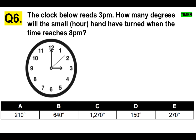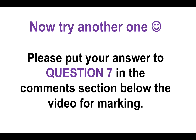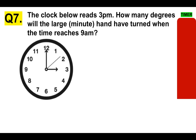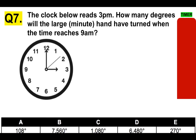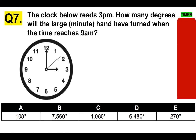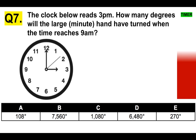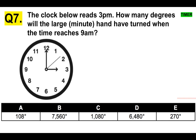Hope you're still with us and enjoying these. Please put your answer to question 7 in the comments section below the video for marking. The clock below reads 3 PM. How many degrees will the large minute hand have turned when the time reaches 9 AM? Tricky one. Is it A) 108 degrees, B) 7,560 degrees, C) 1,080 degrees, D) 6,480, or E) 270? If you get this within the timer, you're doing absolutely fantastic.